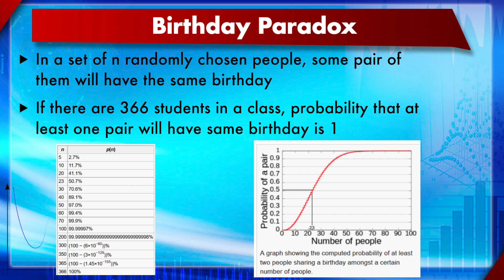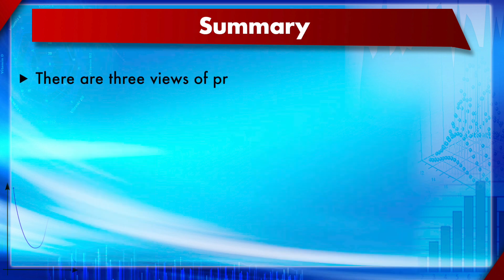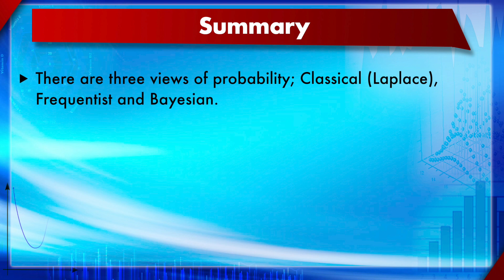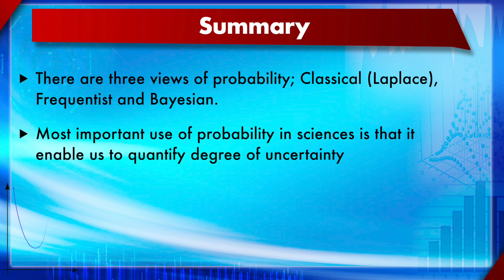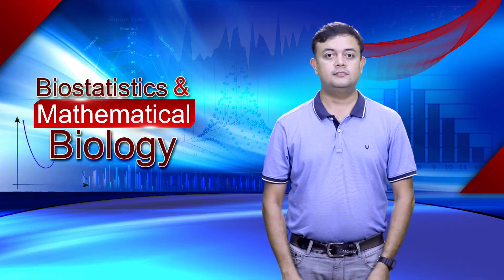In summary, there are three views of probability: the classical view (Laplace), the frequentist view, and the Bayesian view. The most important use of probability in sciences is that it enables us to quantify the degree of uncertainty.